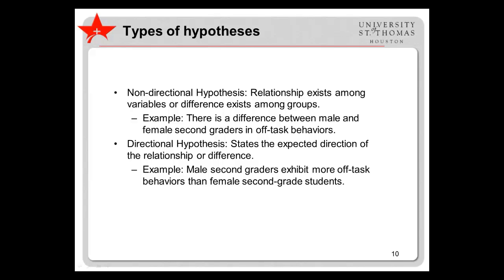Various types of hypotheses are acceptable. Non-directional hypotheses state that a relationship exists among variables or a difference exists among groups. For example: there is a difference between male and female second graders in off-task behaviors. Directional hypotheses state the expected direction of the relationship among variables or difference among groups — for example, male second graders exhibit more off-task behaviors than female second grade students. A non-directional hypothesis is less precise and is generally only used when there is no good support for hypothesizing a specific difference or relationship.